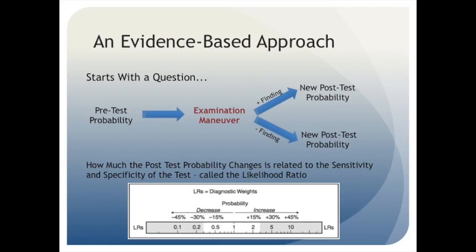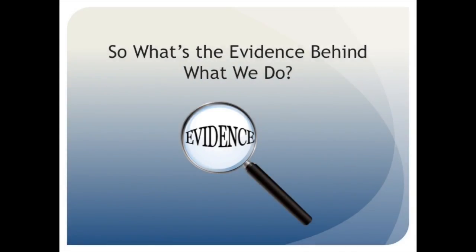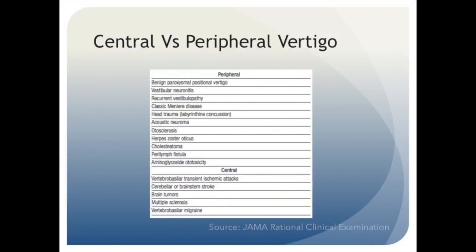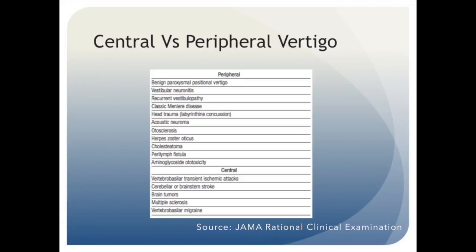Let's see how this applies to the vertiginous patient. Before going any further, it's important to distinguish what we mean when we differentiate between peripheral causes of vertigo, which include processes that act on the peripheral nervous system or the structures of the inner ear, from central causes of vertigo, which act on the cerebellum or central nervous system. Here are some common causes of both peripheral and central etiologies for vertigo.